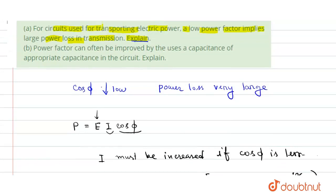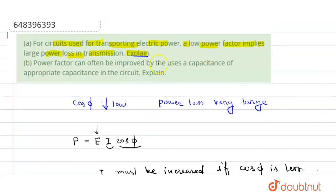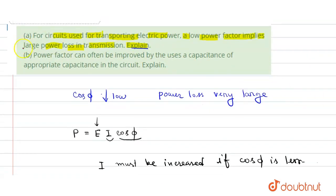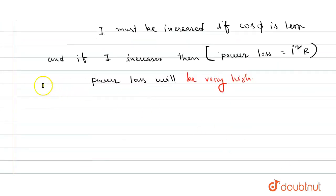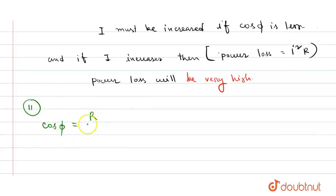So this is the first statement. Now the second statement says: power factor can often be improved by using a capacitor of appropriate capacitance in the circuit — explain. So we know that the power factor cosφ is equal to R by Z.